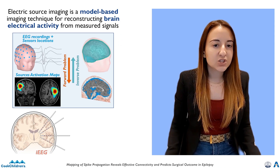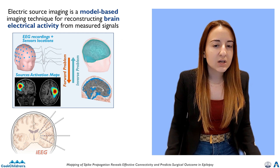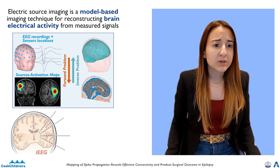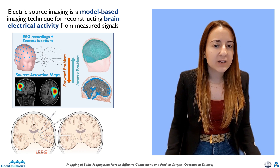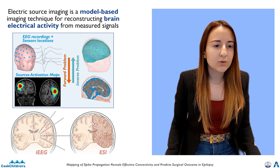We can improve spatial sampling of intracranial monitoring by using electric source imaging. This technique reconstructs the brain electrical activity directly from potential recordings, allowing us to estimate brain activity in many locations, despite the electrodes covering only a few portions of the brain tissue.